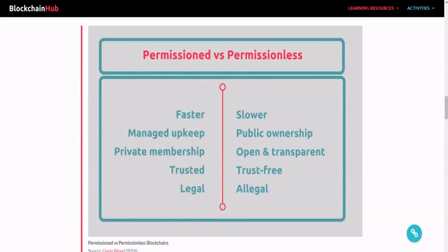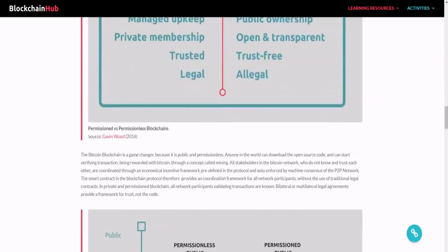The next chart puts permissioned versus permissionless side by side. Permissioned is faster — a key theme — because fewer people means less of a bottleneck, though it requires managed upkeep. Permissionless has public ownership and is open and transparent, while permissioned is private.